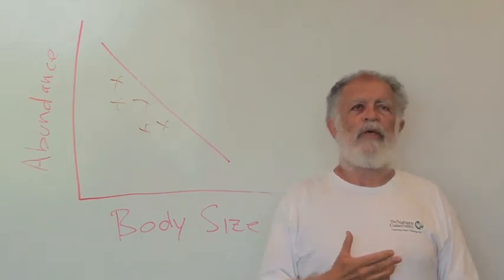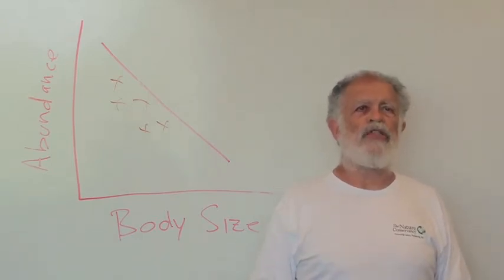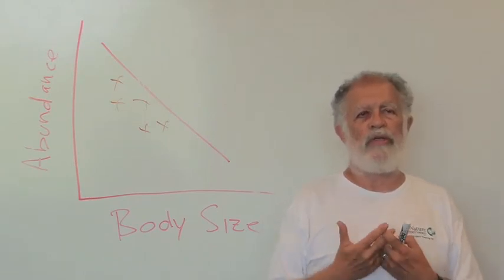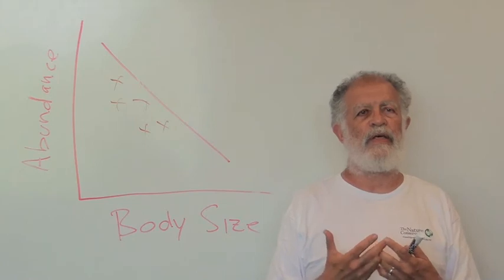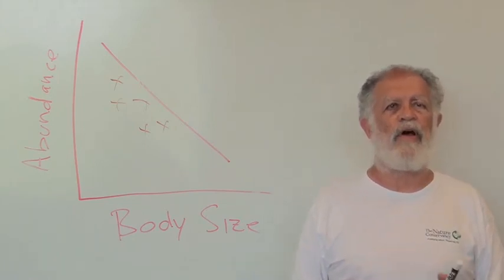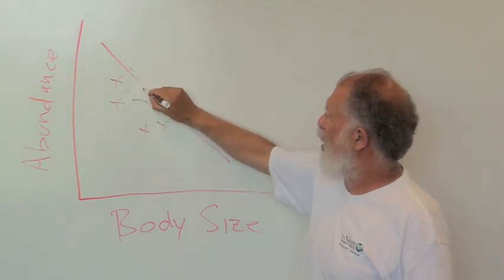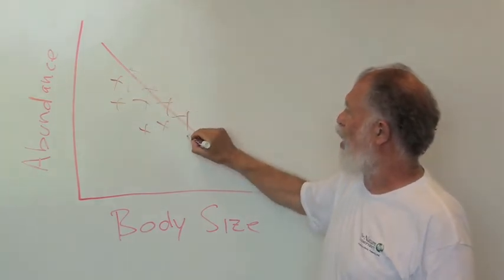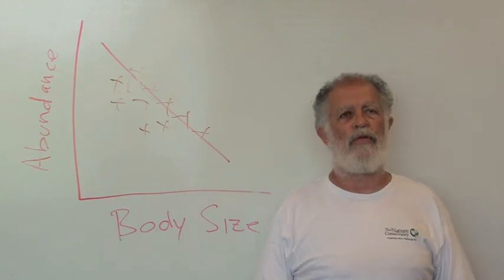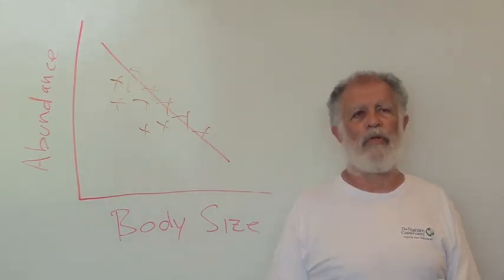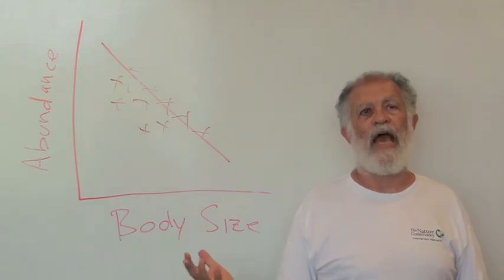Working with the complete food web information that we have, we show that when you include the trophic level, the feeding level of the parasites, that actually that brings them in line so that they now fall on the line with all the other animals, presenting a general rule for all species, free-living and parasitic.